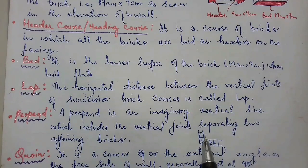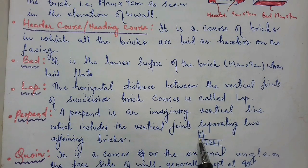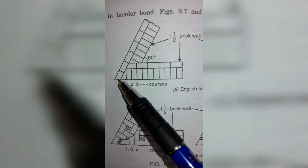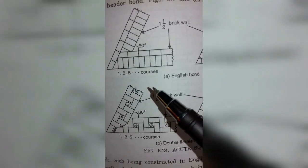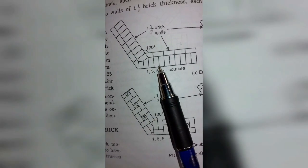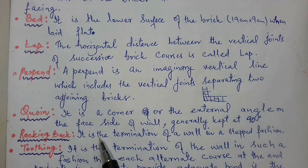Quoin: it is a corner or external angle on the face side of a wall, generally kept at 90 degrees. When two brick walls meet each other making any angle, we call it a quoin. If this angle is equal to 90 degrees, we call it a square quoin. If the enclosed angle is less than 90 degrees, it is known as acute quoin, and if it is greater than 90 degrees, it is known as obtuse quoin.